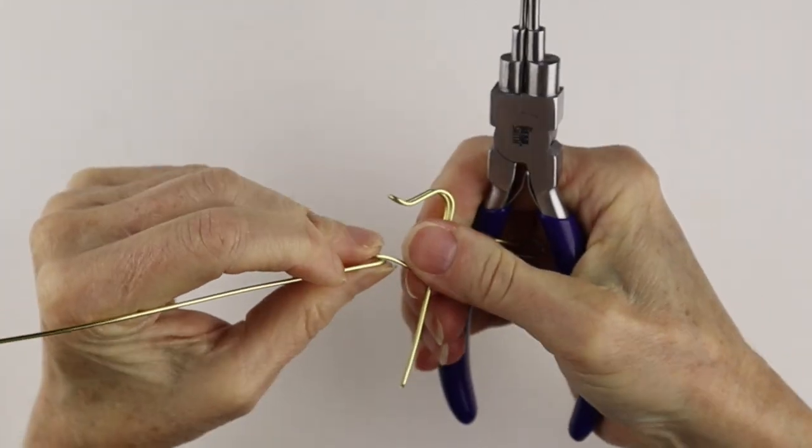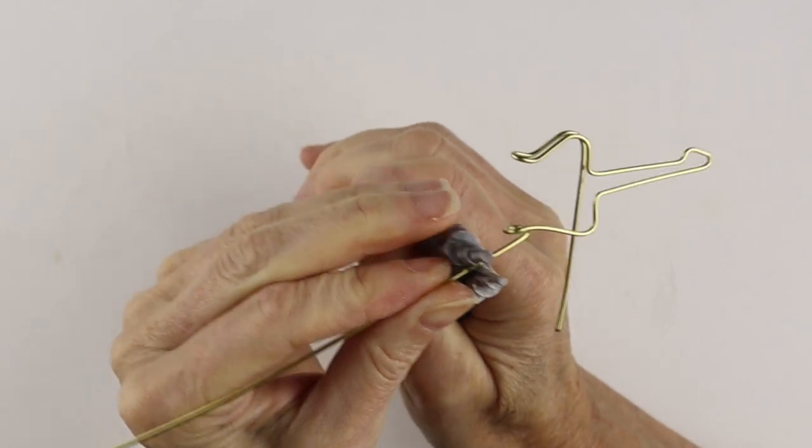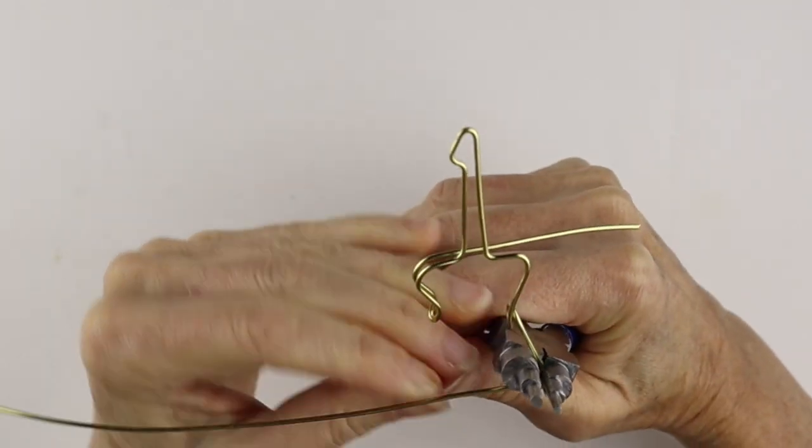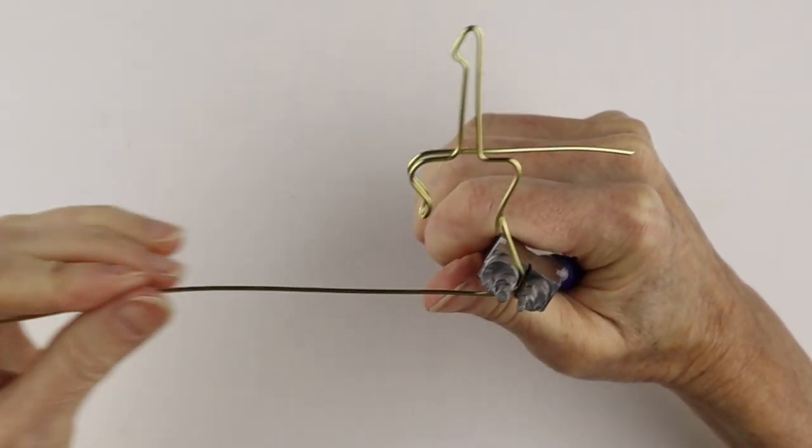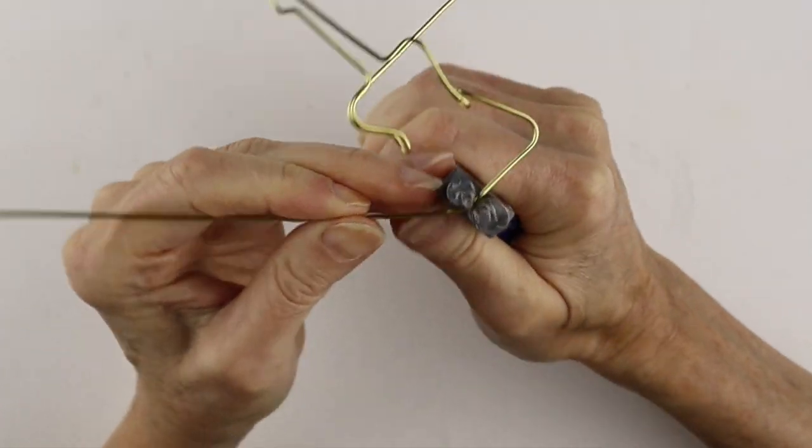Then bring this one out to make the bottom part of the guitar. We can use these parts of the looping pliers to bring it out that way, and then we're going to form this spring loop.